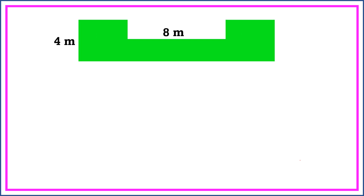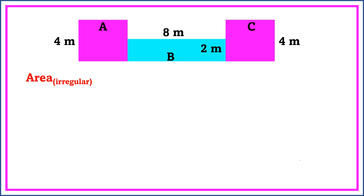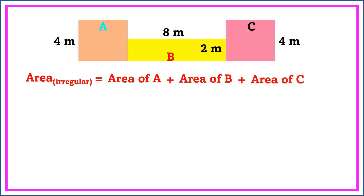Find the area of an irregular figure with the following dimensions: 4 meters and 8 meters. To find the area of this figure, we can separate it into parts. As we can see, we can form two squares and one rectangle in this figure. The width of the rectangle is 2 meters and the side of each square is 4 meters. We label these parts as A, B, and C. To find the area of this irregular figure, we're going to find the area of A plus the area of B plus the area of C.